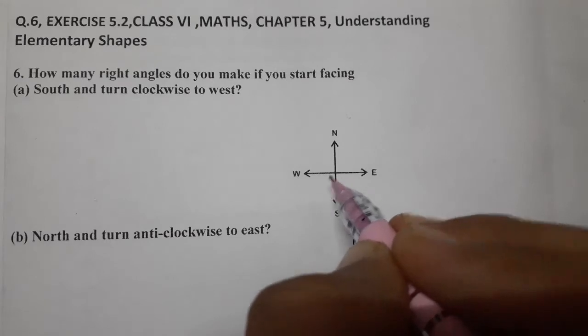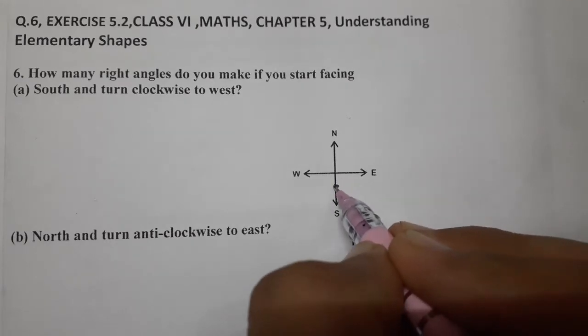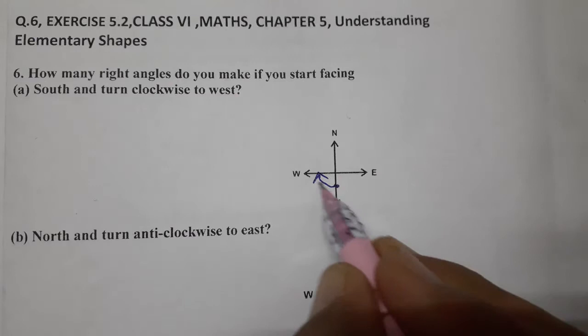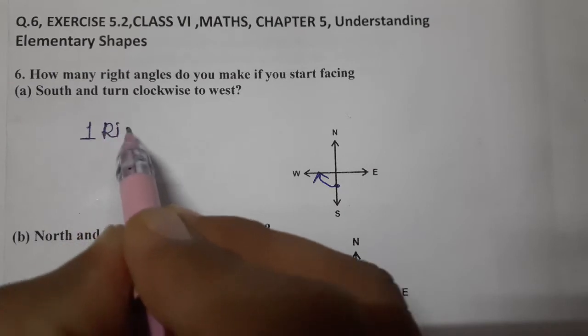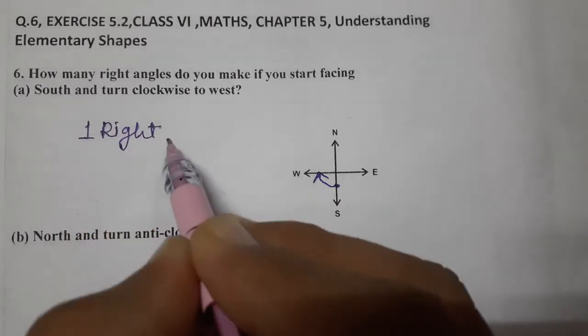We have to move clockwise to west. So clockwise is in this way, towards west only. So one right angle only. See, south to west, one right angle.